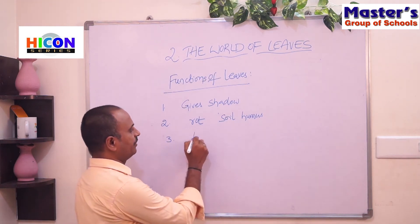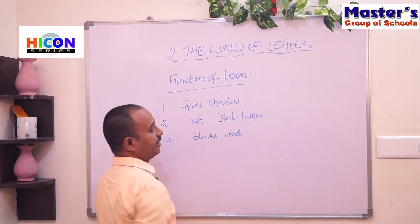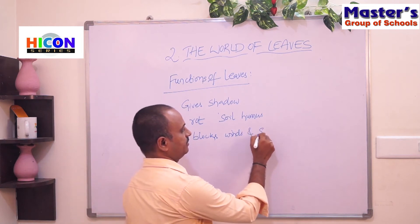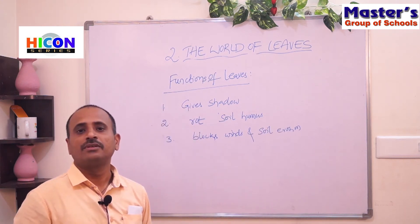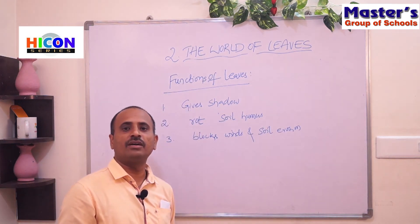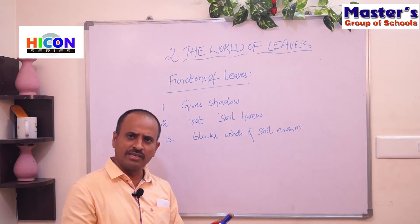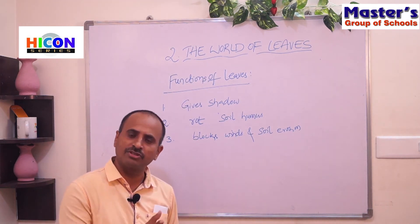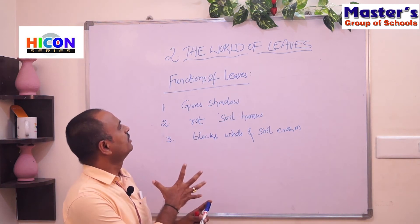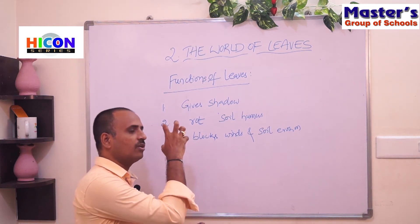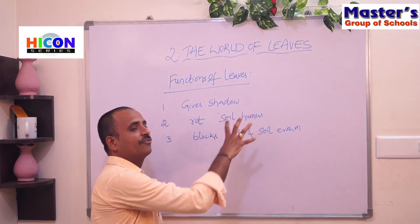Another function: leaves block the wind and prevent soil erosion. During cyclones and rainy days, water flows on the ground and takes away the humus soil from the upper parts of the ground. These plants prevent the soil from erosion — their leaves block the winds and block the soil from being swept away.